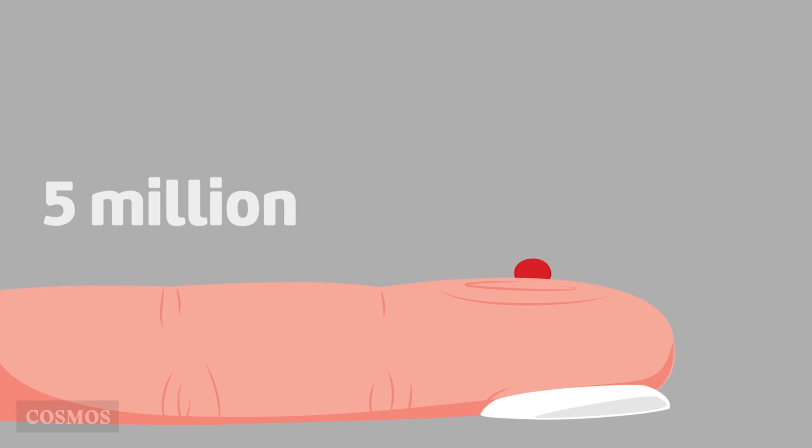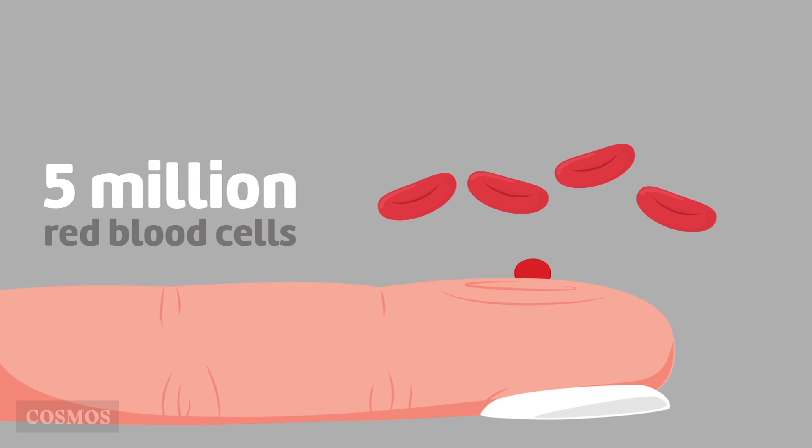And each drop of blood has around 5 million red blood cells, so the blood can carry much more oxygen than if the oxygen simply dissolved in the plasma.